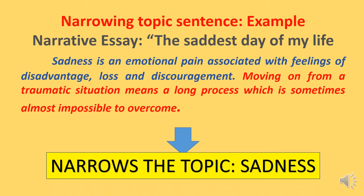Let's see an example from the narrative essay 'The Saddest Day of My Life.' The opening statement is: 'Sadness is an emotional pain associated with feelings of disadvantage, loss, and discouragement.' Then the narrowing topic sentence is: 'Moving from a traumatic situation means a long process which is sometimes almost impossible to overcome.' So you move from sadness to a traumatic situation — you are narrowing the topic.